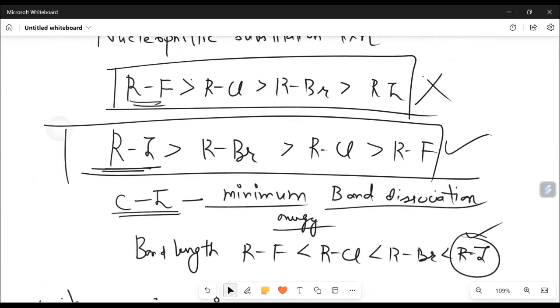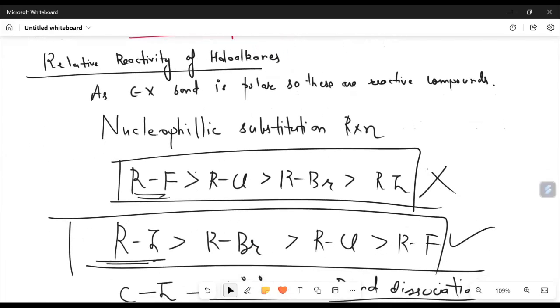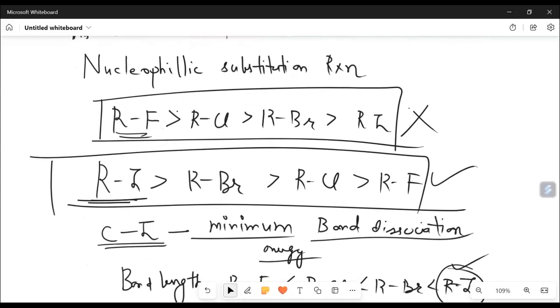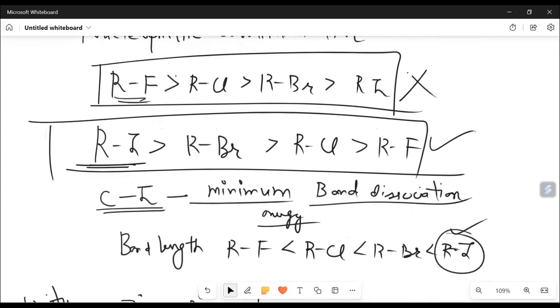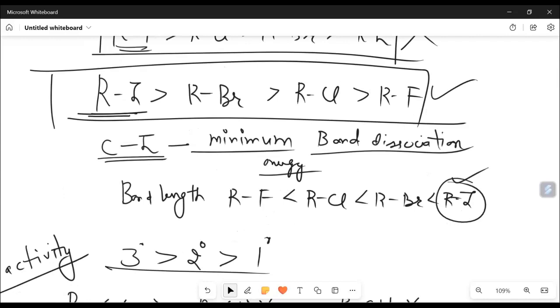So what we have learned in this thing, the chemical properties is related to the CX bond, the polarity of CX bond. And that's why they are more likely to undergo nucleophilic substitution reaction. RI is the most reactive, then RBR, then RCL, then RF because of the bond dissociation energy.